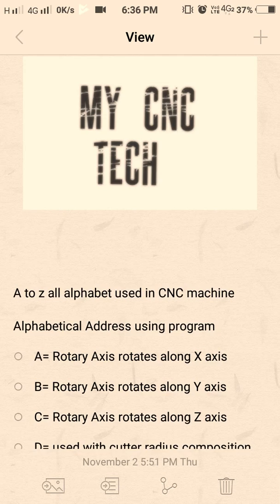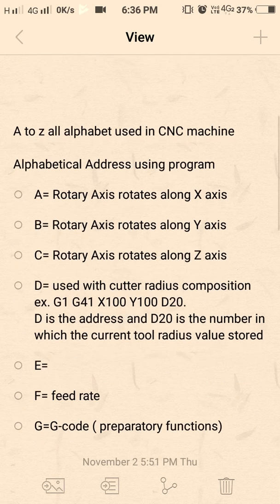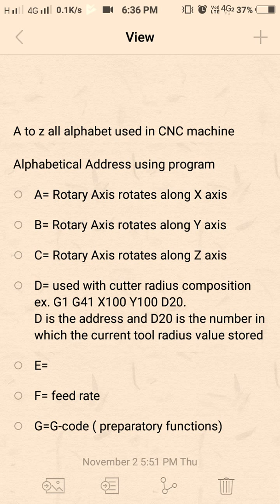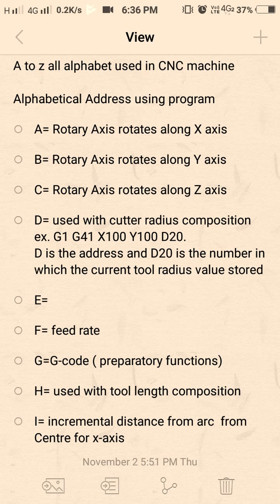Alphabetical addresses used in CNC programs: A, B, C are rotary axes that rotate along with X, Y, Z. A is parallel to X, B is parallel to Y, C is parallel to Z. D is used for cutter compensation — with G41 and G42 we give the exact correction value in the D value.